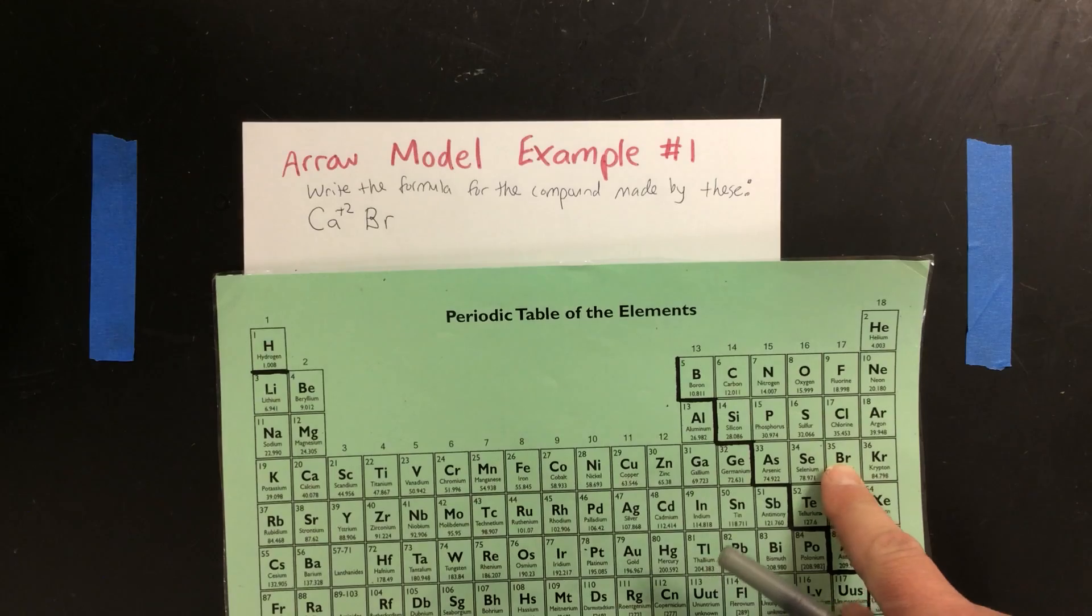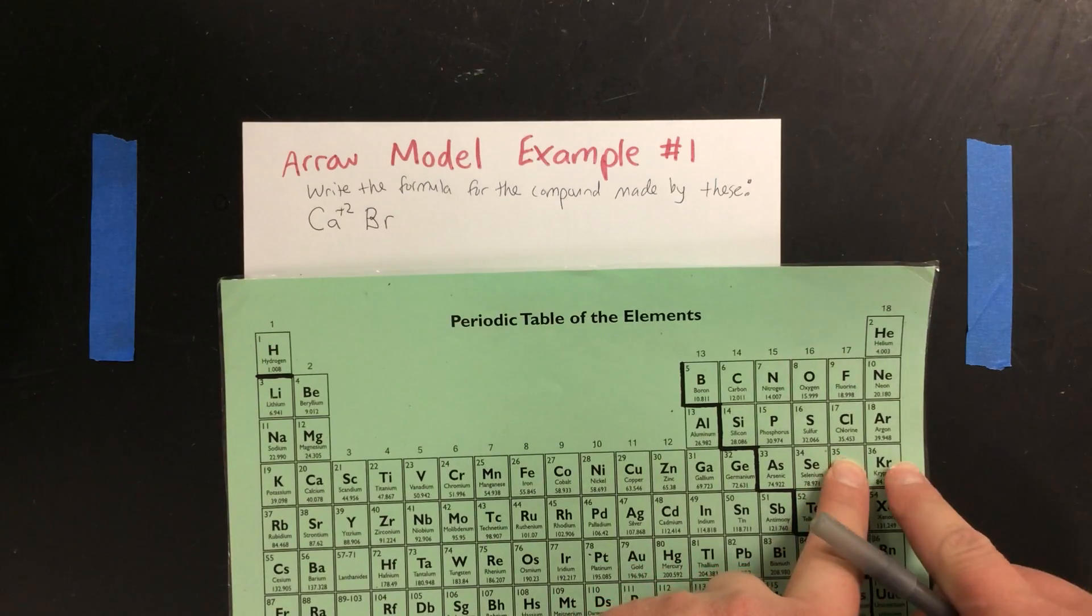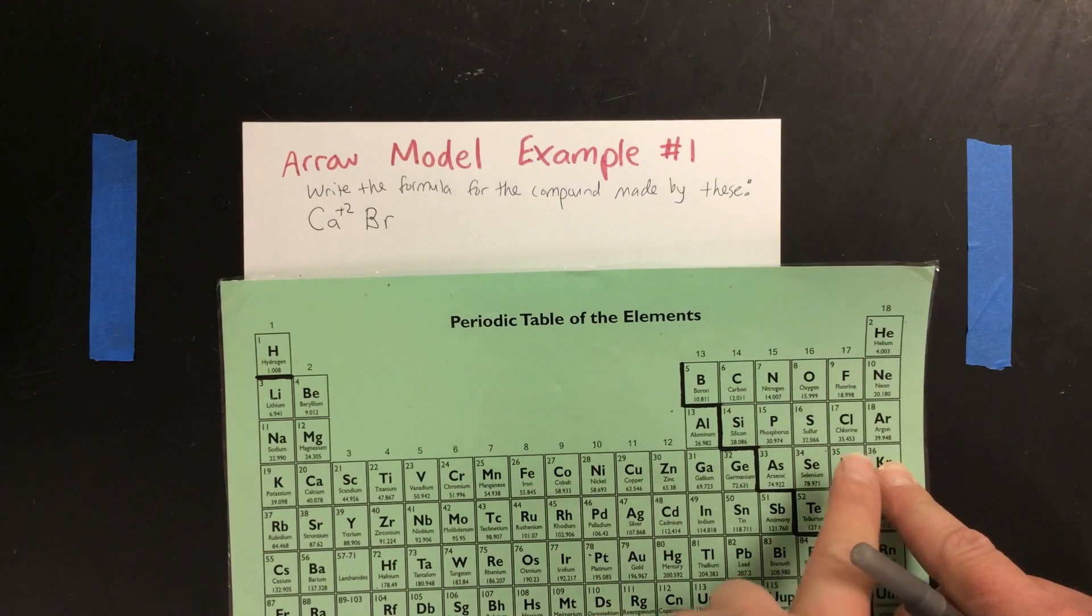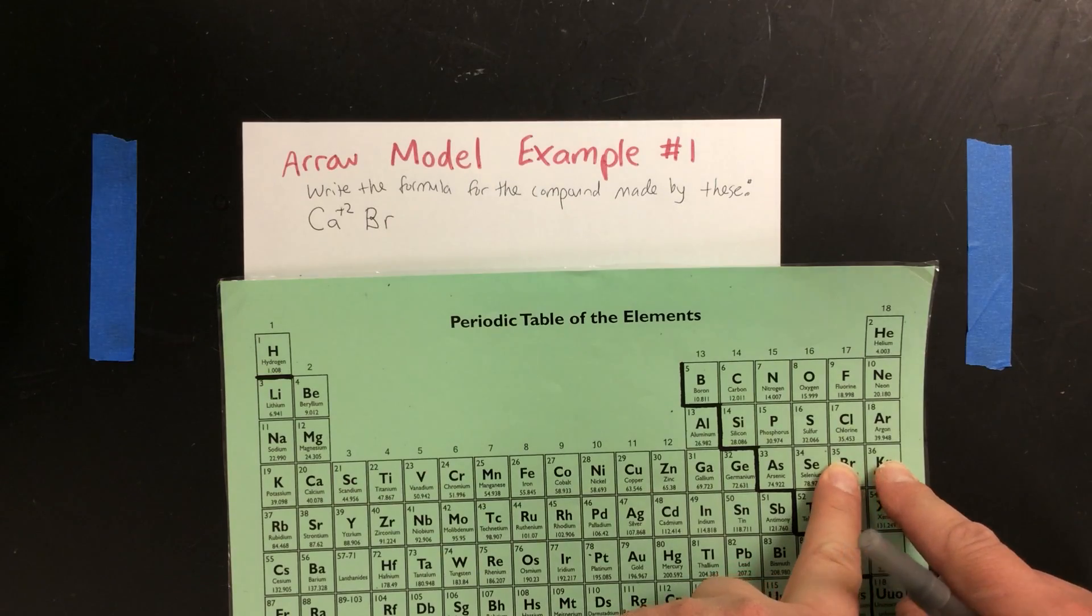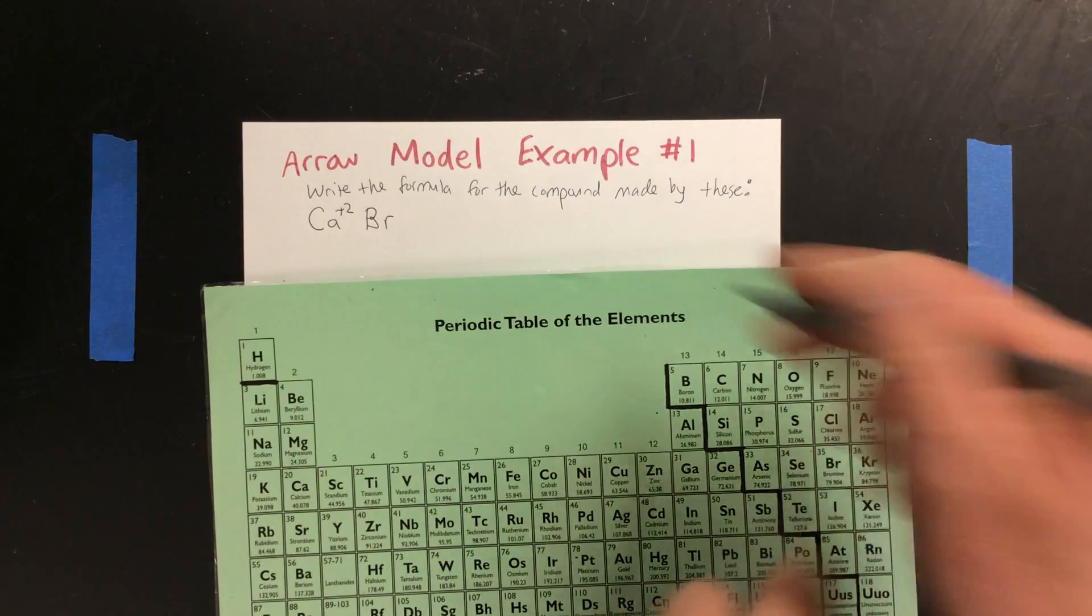Then we find bromine. Here's bromine. Nearest noble gas is krypton, so we count from krypton to the element. That's going down one, so it would be minus one.